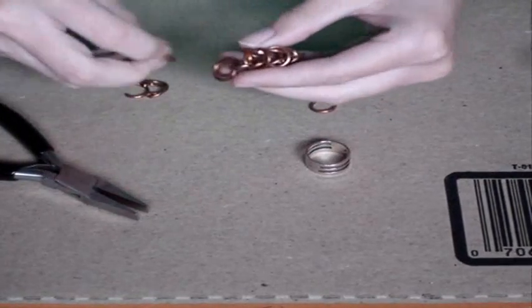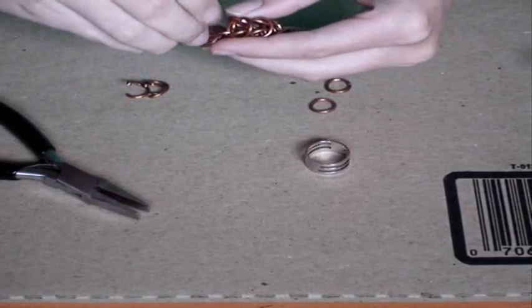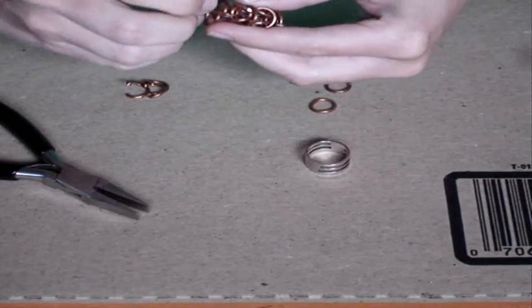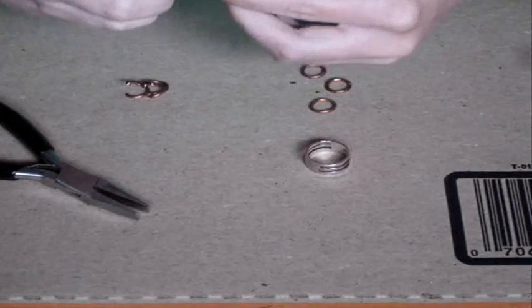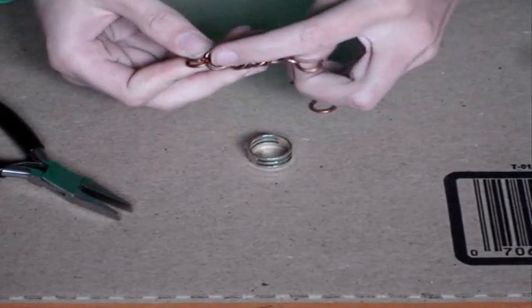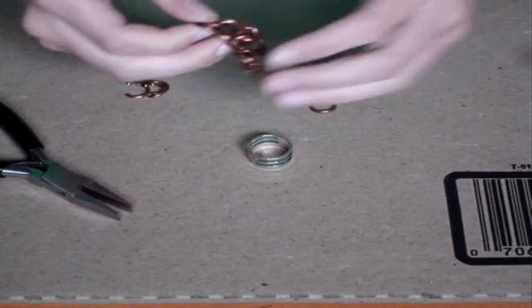You take another ring, slip it through the bottom two again and through the ones in the purse. So that's four rings you slip it through. So now at that point you have two boxes here that you can see. It's starting to take shape a bit.